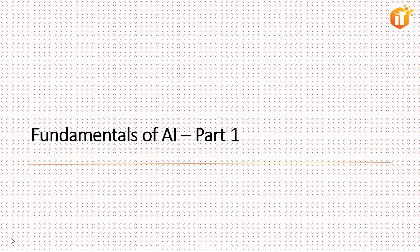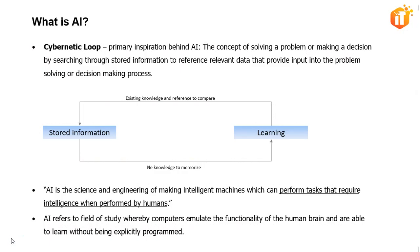The first thing we are going to discuss is fundamentals of AI, starting with what AI is. When a human attempts to solve a problem or make a decision, the human brain searches through stored information to reference relevant memories that provide input into the problem-solving or decision-making process. This concept is known as the cybernetic loop, which is the primary inspiration behind artificial intelligence.